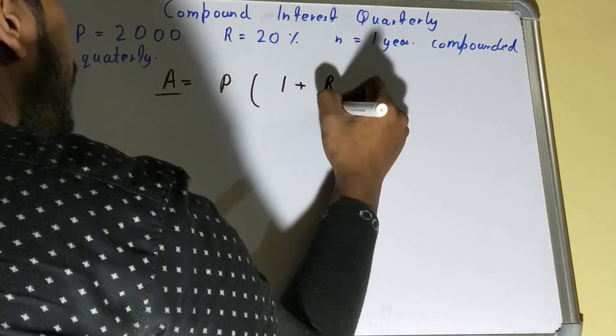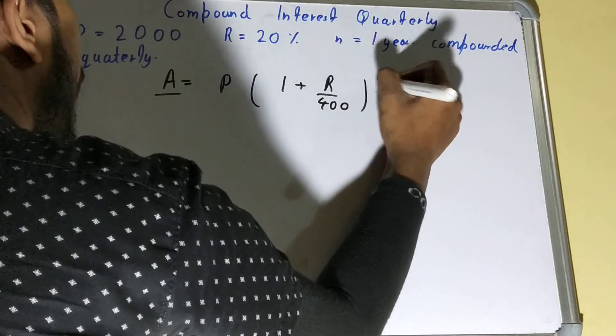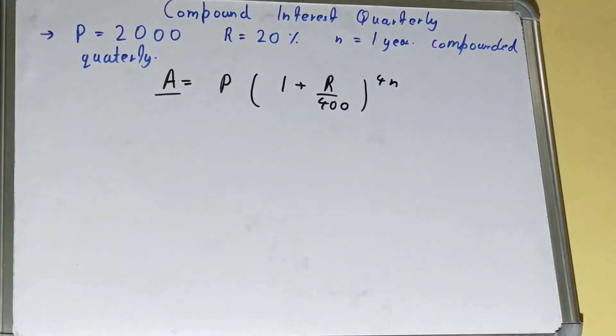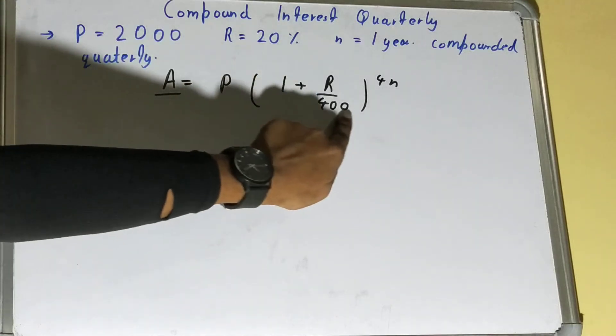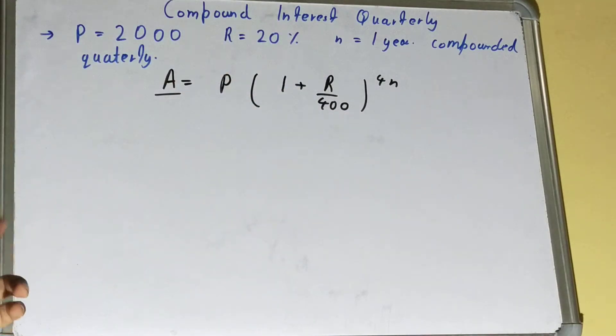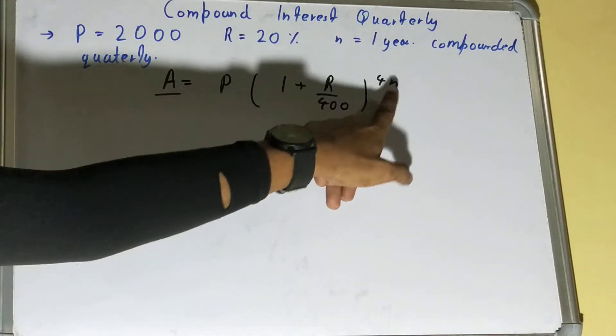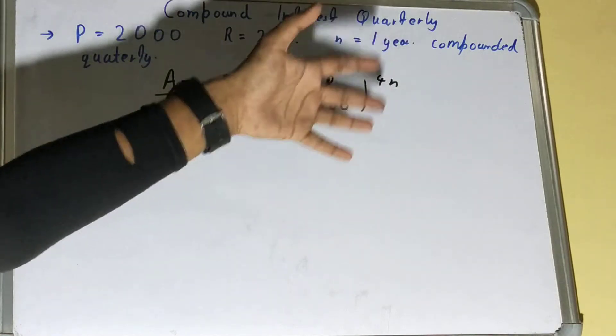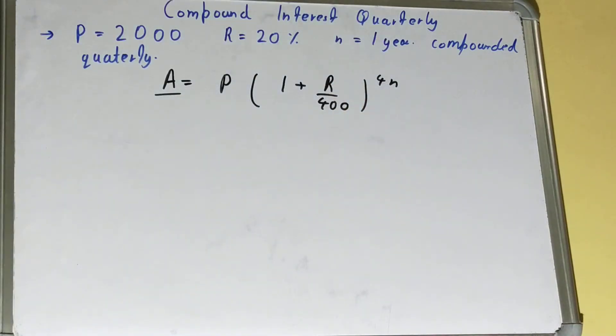R upon 400, and it will be to the power 4n. Remember that here it will be 400 instead of 100, which is for yearly. And here it will be 4n instead of just n as compared to yearly.